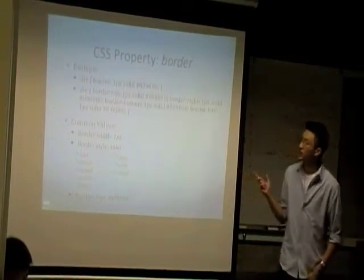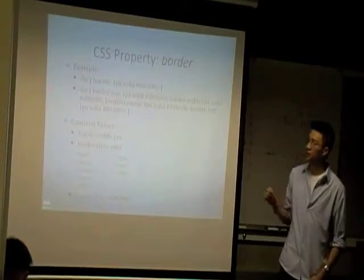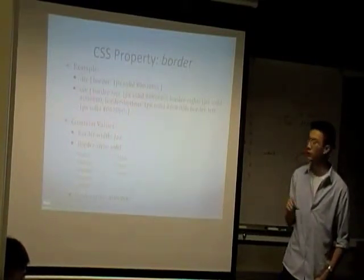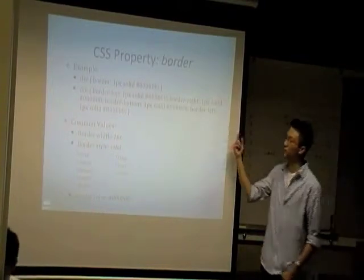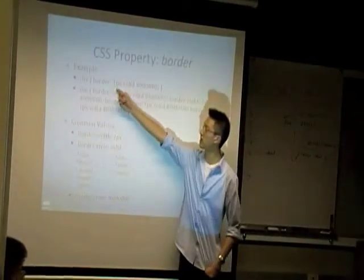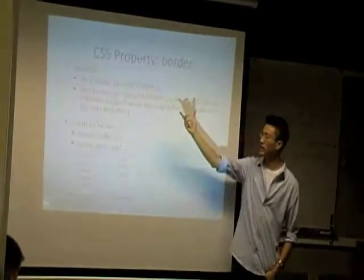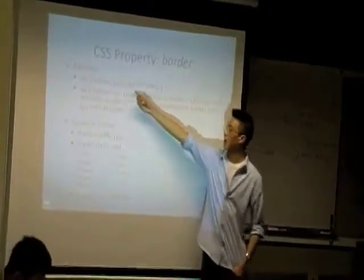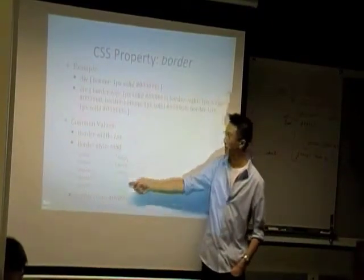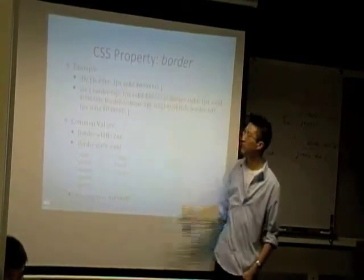So borders - you guys should have already had this in mini project one. I just wanted to review it quickly. The syntax for border isn't too complicated. It basically starts off with the width of the border itself, the style that you want - in this case it's solid, but you can set anything you want - and the color, which is just the hex code.